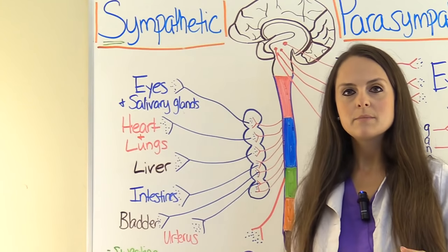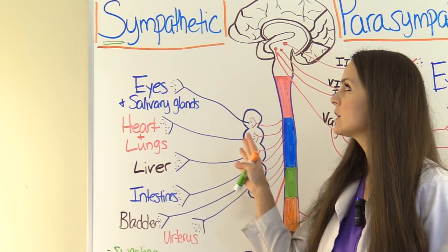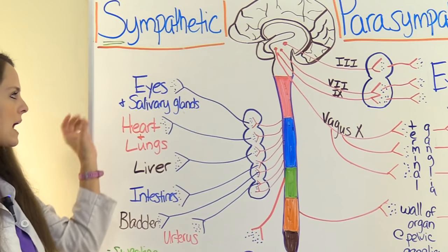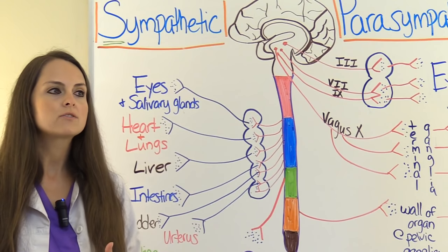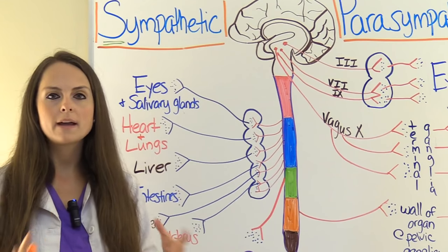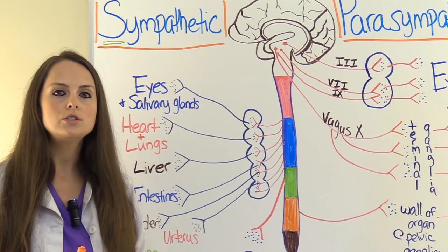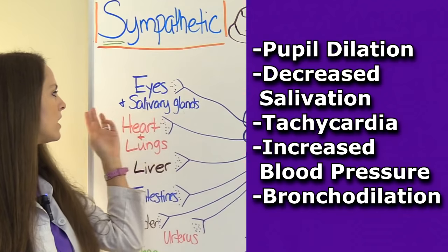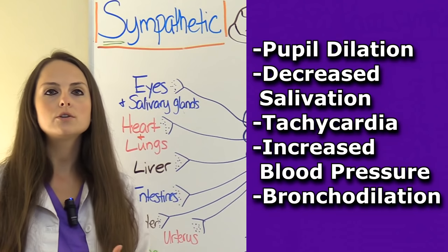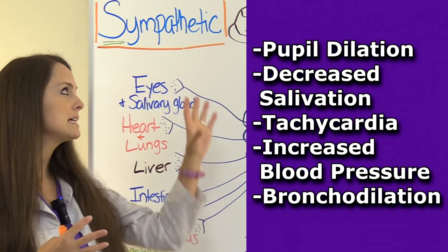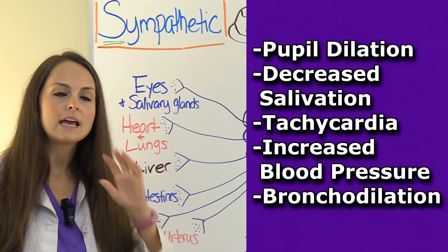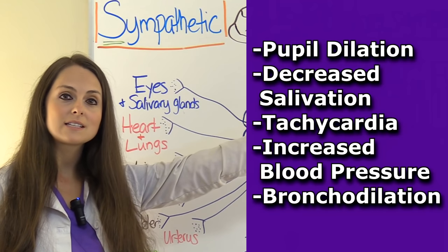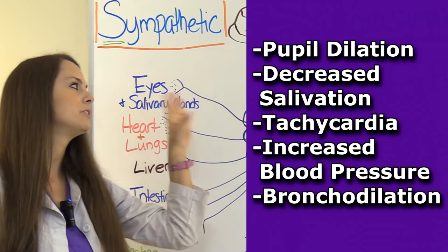Now let's look at the signs and symptoms a person presents with when their sympathetic nervous system is stimulated. With the eyes, it's going to cause pupil dilation so you can see your surroundings better. The salivary glands won't produce as much saliva, because saliva plays a role in digestion and we can digest later. The heart and lungs are affected: you'll see tachycardia and increased blood pressure, and the lungs will have bronchodilation so you can inhale more air and run.